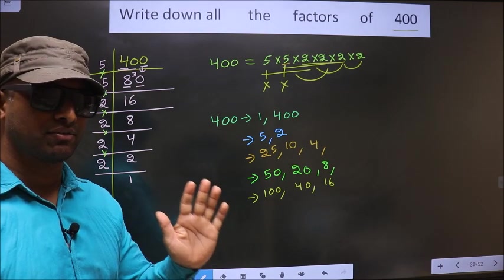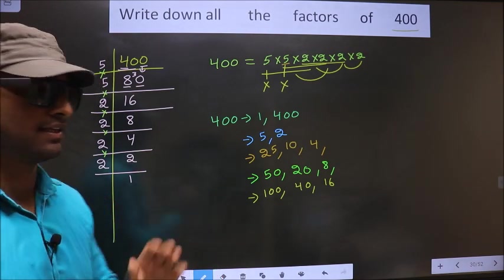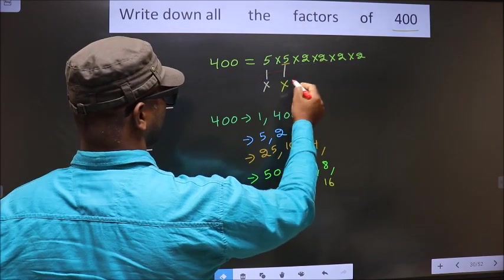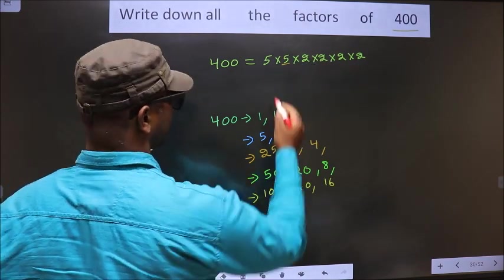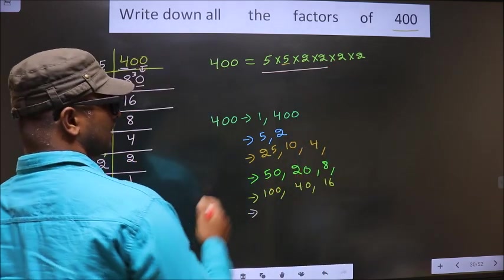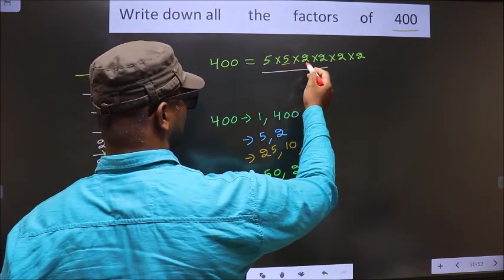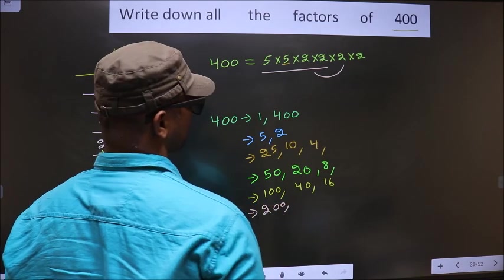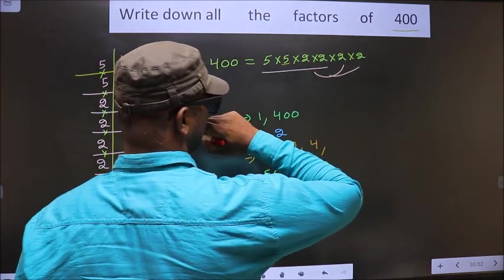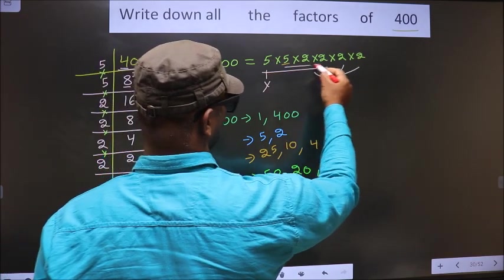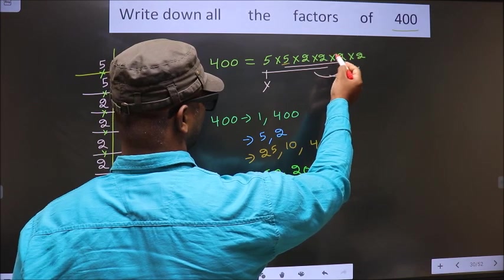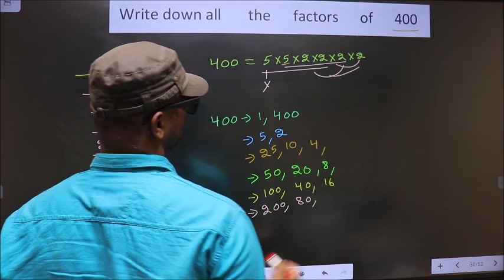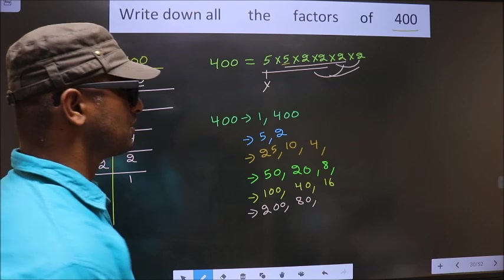Now take combinations of 5 numbers. Fix 5, 5, 2, 2: 5 × 5 is 25, 25 × 2 is 50, 50 × 2 is 100, combined with 2 gives 200. Leave one 5; take 5, 2, 2, 2: 5 × 2 is 10, 10 × 2 is 20, 20 × 2 is 40, combined with 2 gives 80. No more combinations possible.